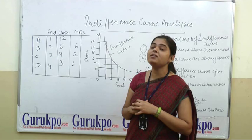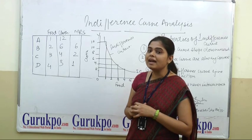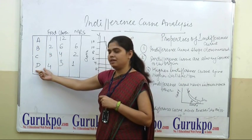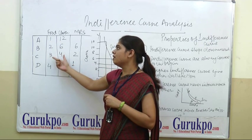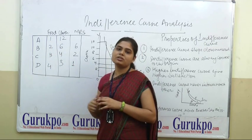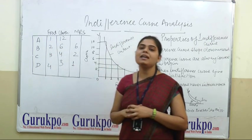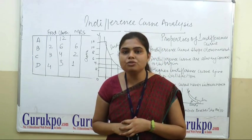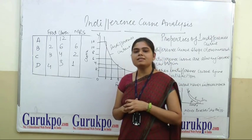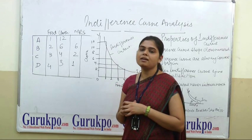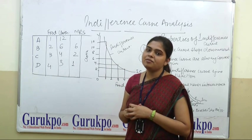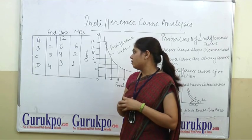In concluding words, we can say that all combinations A, B, C, and D vary in the quantity of food and cloth, but all combinations give equal satisfaction to the consumer. These combinations give equal satisfaction to the consumer, and when we plot this table on a graph, we make the indifference curve.